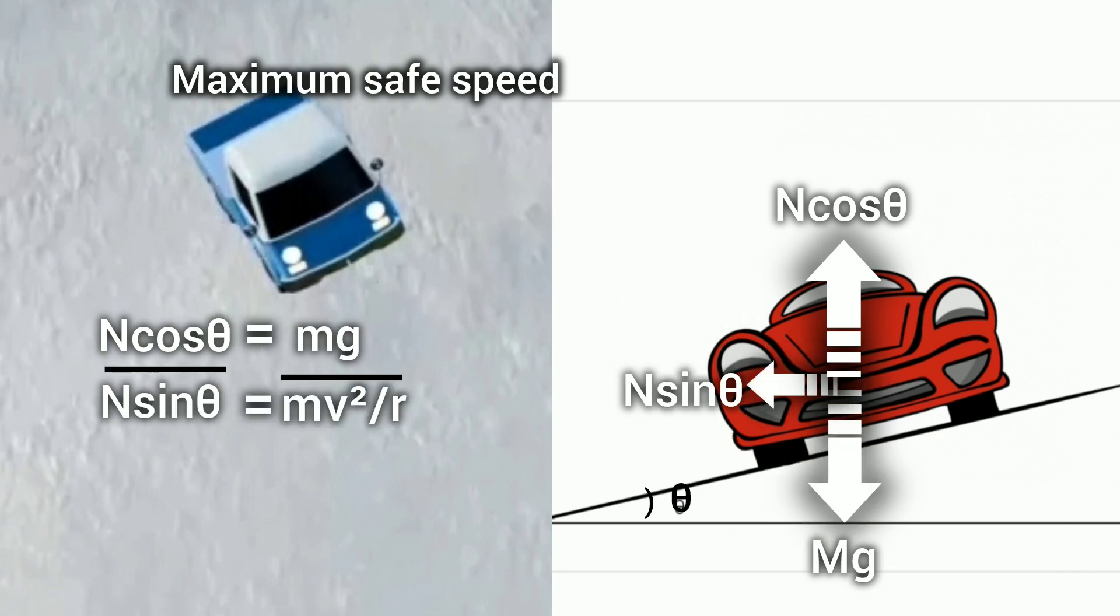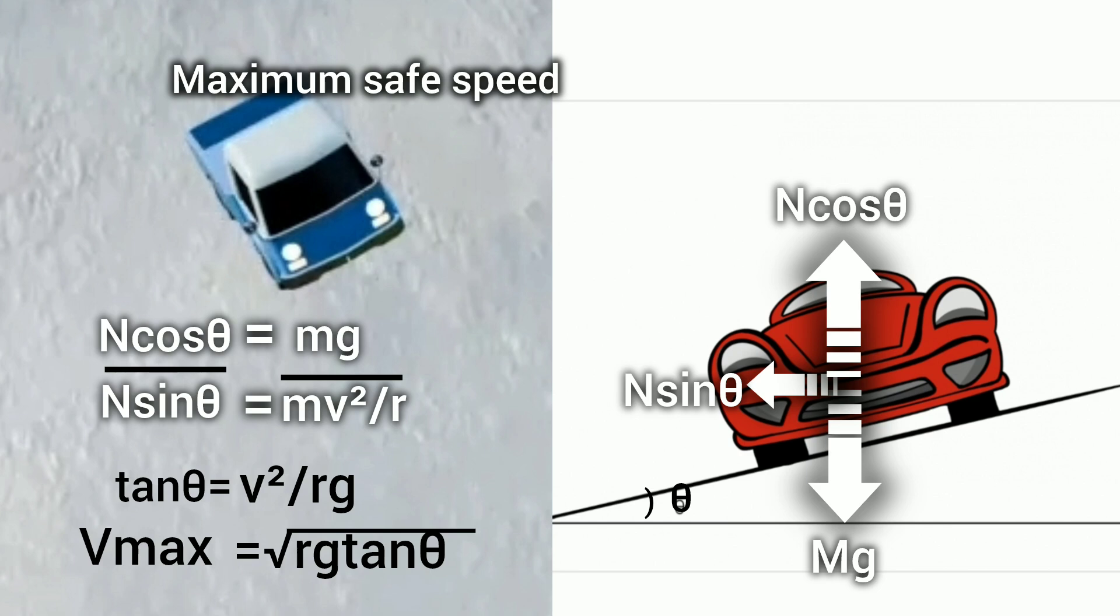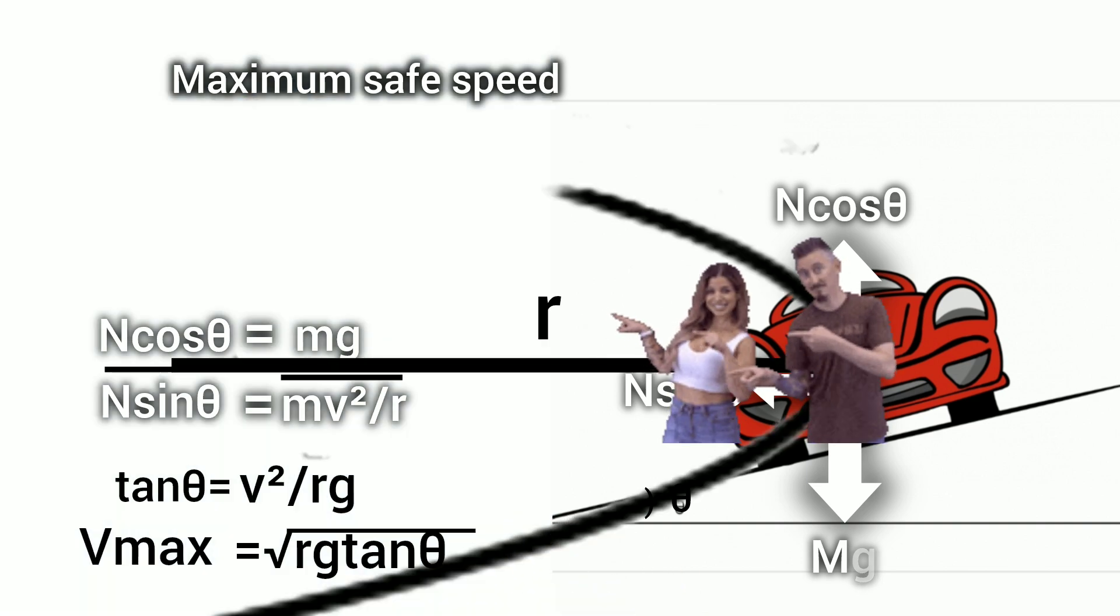Simplifying the equation, we can find the maximum safe speed for the car on the banked road. In short, the maximum safe speed depends on angle of banking and radius of circular turn.